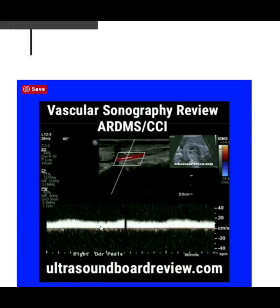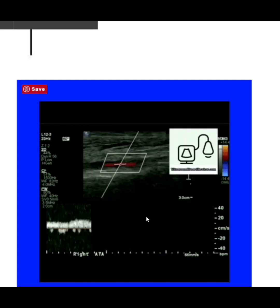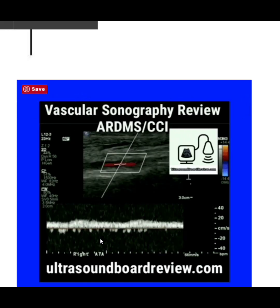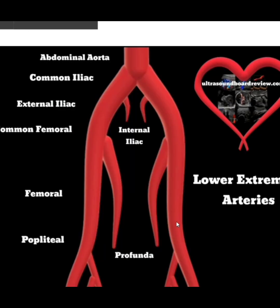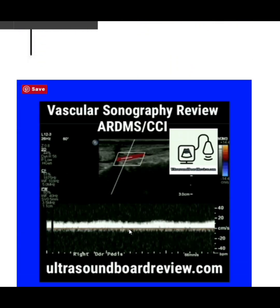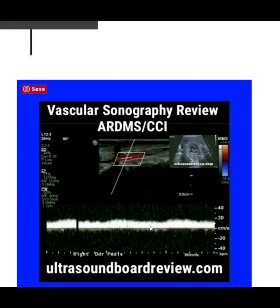This waveform is characterized as low velocity, low resistance flow, with a delayed upstroke followed by a delayed downslope. This is called the Tardus Parvus waveform. It indicates that you are evaluating an area distal or downstream from the disease, meaning the disease is upstream or proximal. If you see low velocity, low resistance flow with flow in diastole, you are evaluating downstream from the disease.